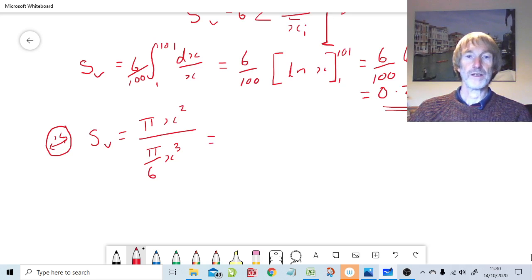So in other words, Sv for a sphere is six over x. And we're after the equivalent spherical diameter that has the same specific surface area per unit volume as the distribution, which is 0.277.